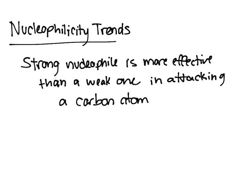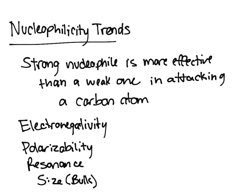There are essentially four things we're going to talk about: electronegativity, polarizability, resonance, and size — which we also call bulk. Those are the four factors you consider when determining how strong a nucleophile is. We'll start with electronegativity.